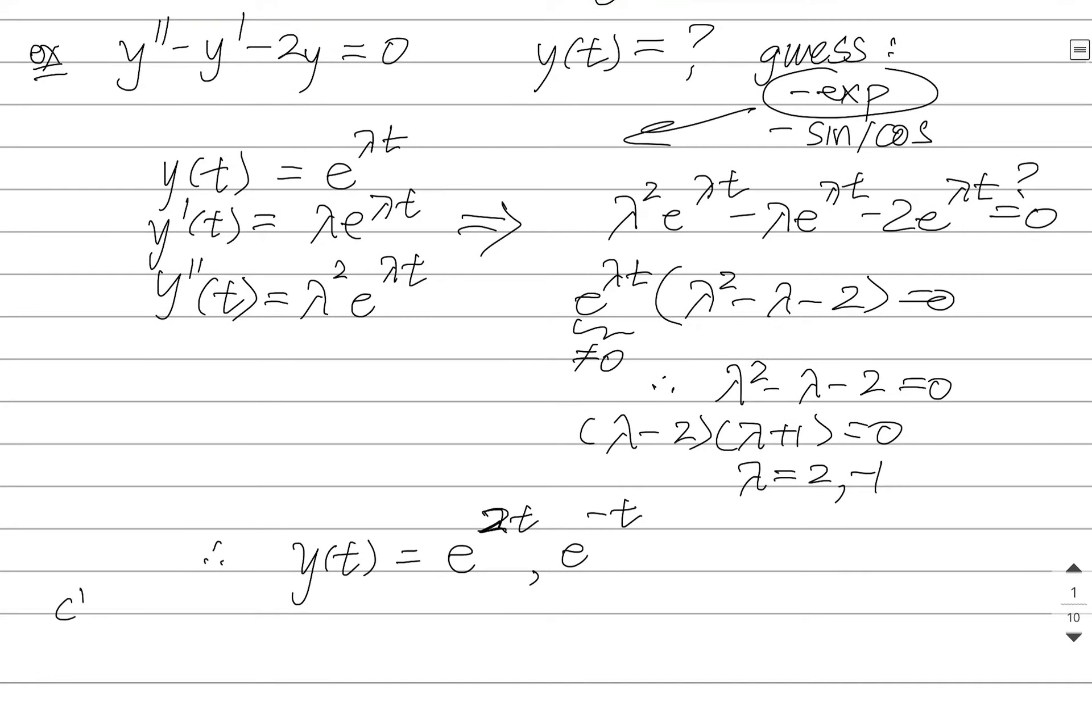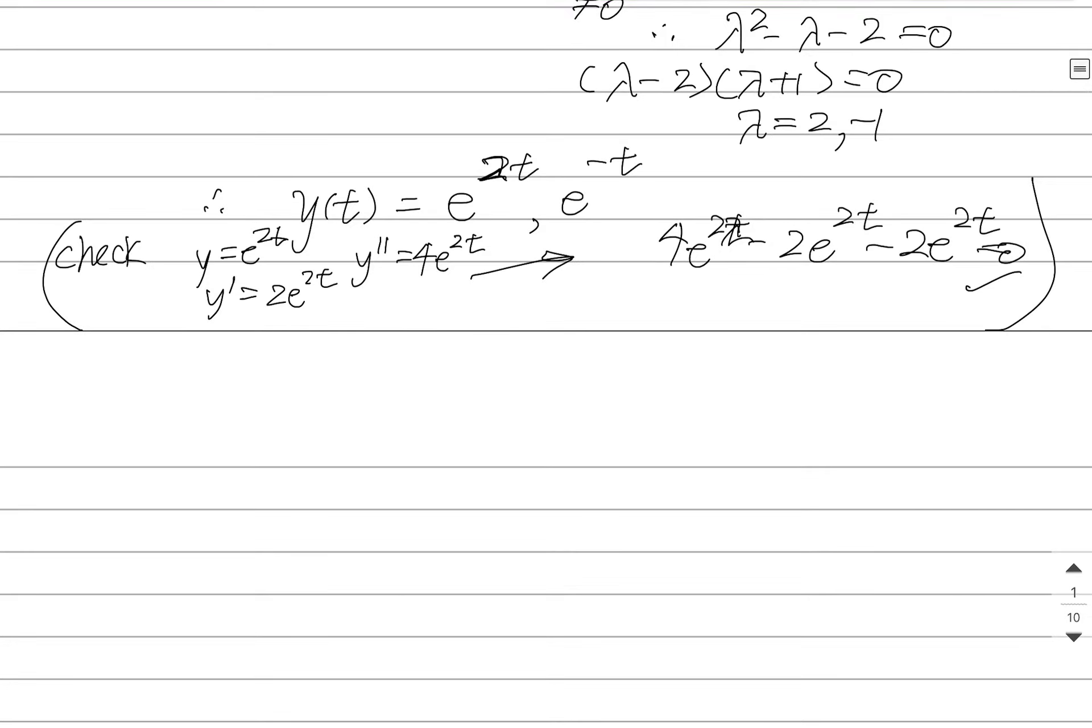And if you wanted to, you could check this out, right? You could take the derivative of 2t, Y prime is 2e to the 2t, Y double prime is 4e to the 2t. If you plug that into the DE, you'll get 4e to the 2t subtract 2e to the 2t subtract 2e to the 2t. And yes, it does give me zero like I expect it to. So there's some questions that come up here.